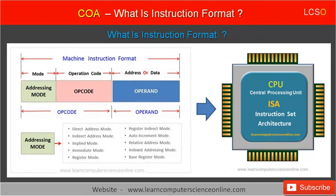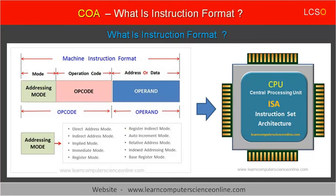The addressing mode value directs the CPU to fetch the data. If the value of the addressing mode is zero, then it is referred to as direct referencing. For direct referencing, the operand contains the data. Otherwise, the operand contains the reference to the memory address that points to the actual data that needs to be operated by the CPU.